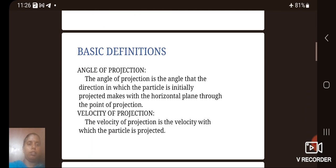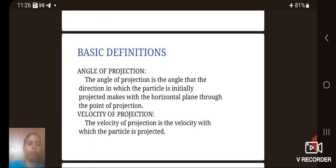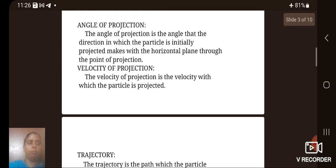The basic definitions of the projectile are angle of projection. The angle of projection is the angle that the direction in which the particle is initially projected makes with the horizontal plane through the point of projection. The velocity of projection is the velocity with which the particle is projected.